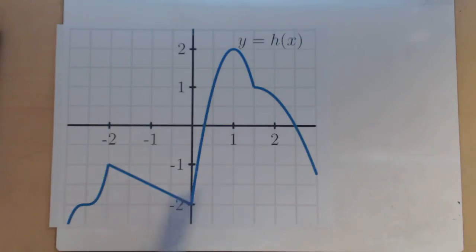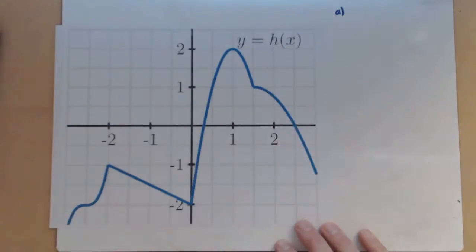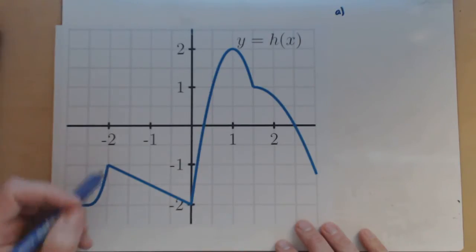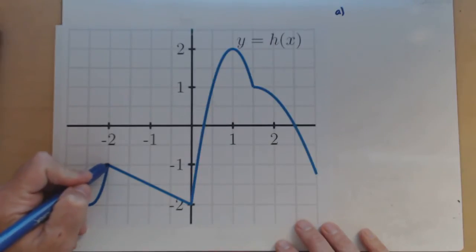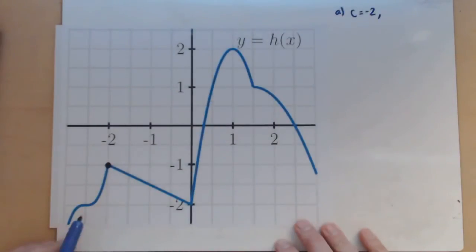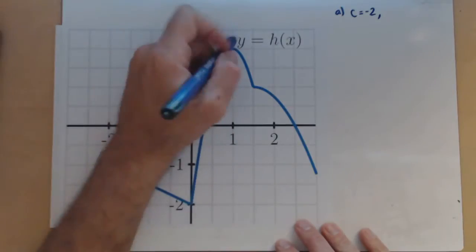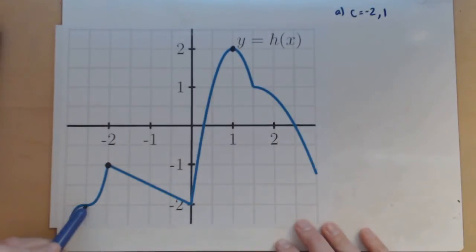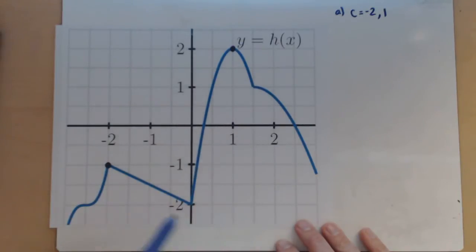For preview activity 3.1, we're given the graph for y equals h of x, and part a asks us to find all values of c for which h of c is a local maximum. That means it's maximum relative to the points around us — we might think of it as the peak of a mountain. The first value we see is c equals negative 2, and then we have one at c equals 1. This one's not quite a peak because it starts back up again, and there's no peak on the end. So those seem to be the only two values of c for which we have a local max.